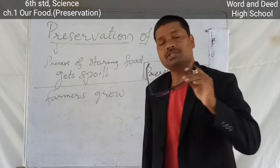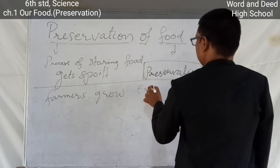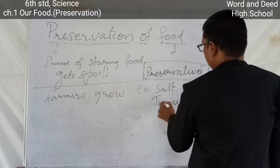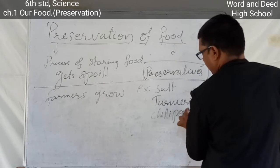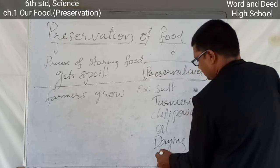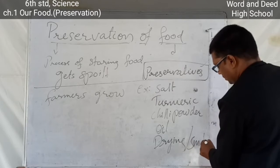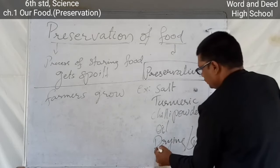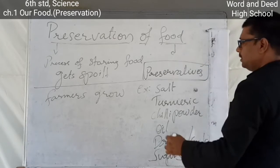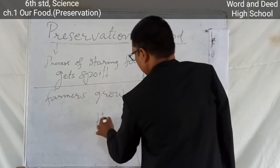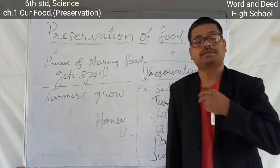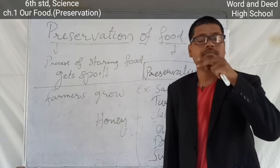Some examples of preservatives are salt, turmeric powder, chili powder, oil. Another method we follow is drying and smoking. Sugar syrup and honey are also used as preservative ingredients. These preservatives help prevent food from spoiling and help food items remain good for a long time.